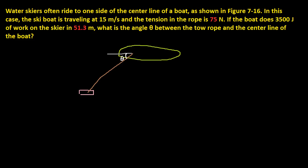So in this case, when a ski boat is traveling at 15 meters per second and the tension in the rope is 75 newtons, if the boat does 3,500 joules of work on the skier in 51.3 meters, what is the angle theta between the tow rope and the center line of the boat?